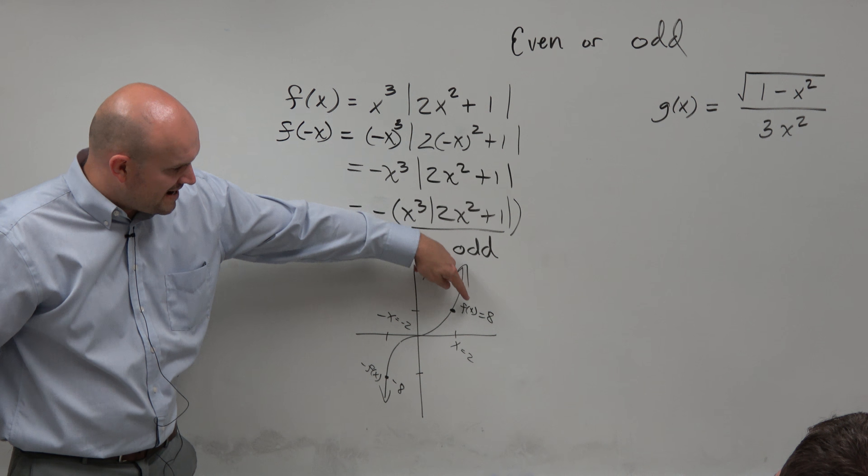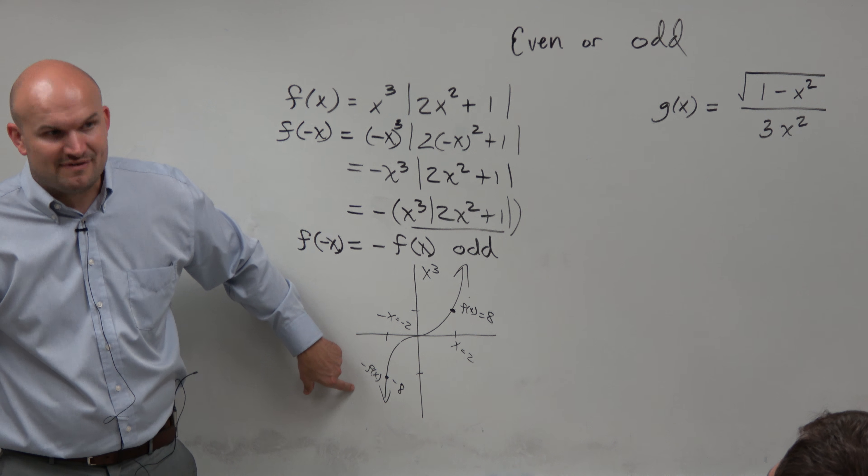So when you plug in 2, you get f of x. If you plug in a negative, you're going to get the negative y value.